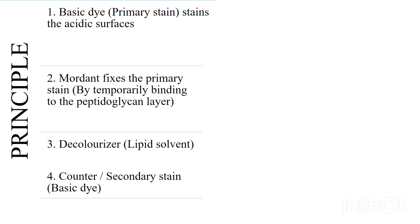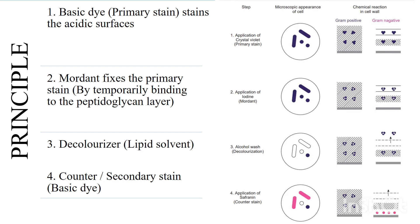In the Gram-negative bacterial cell wall, there is a thin peptidoglycan layer, lipoprotein, and importantly, lipopolysaccharide. There is no teichoic acid, and we can see porin channels as well. The principle continues — we have four different stains in Gram staining.